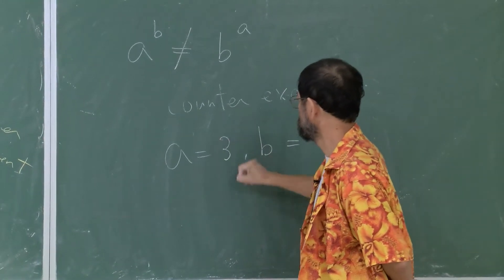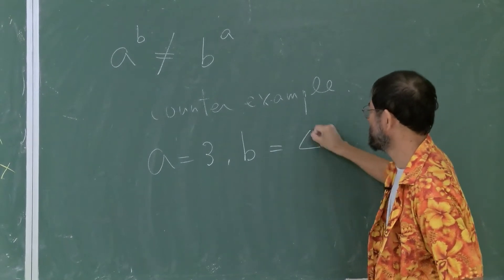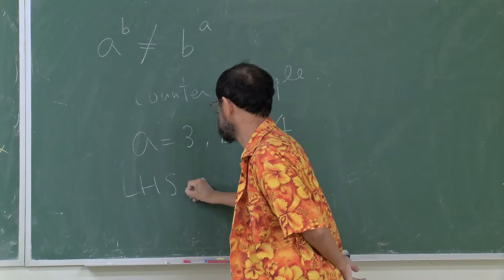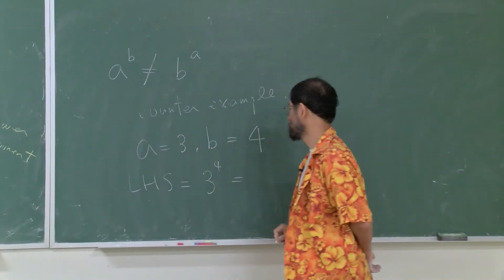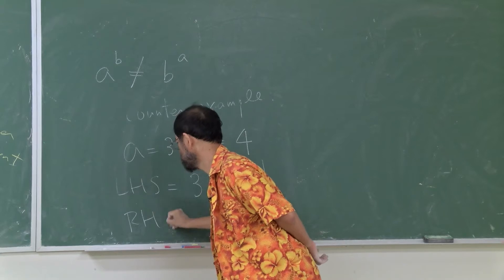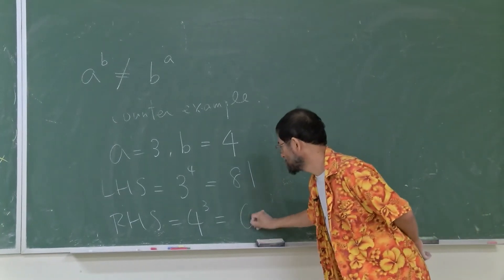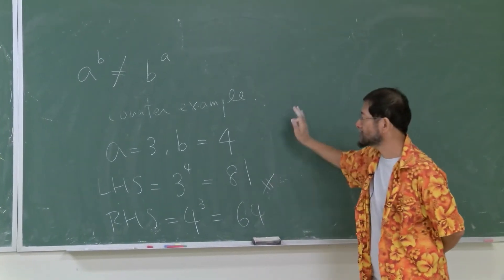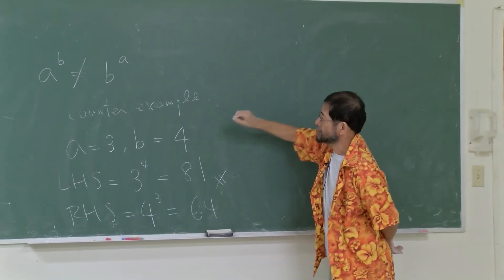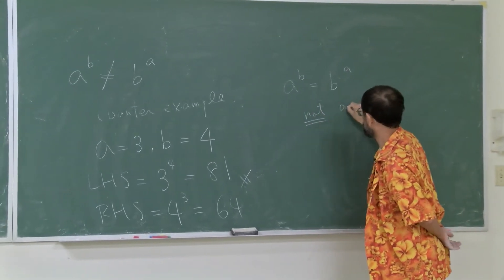Let's try with three and four. Your left-hand side, which is a raised to b: three raised to four, which is three times three times three times three, equals eighty-one. Then your right-hand side is four raised to three, which is four times four times four, which is sixty-four. So they are not equal. The answer is no — this is not equal in general; this is not an identity.